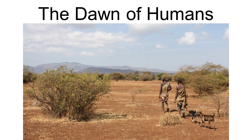Today we are looking at the dawn of humans, and here we have an image of modern day humans living in Africa — a hunter-gatherer tribe. A lot of the characteristics of prehistoric humans are shared with tribes such as these, like the San in Namibia and Botswana, that exist today.